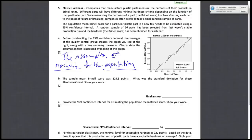So moving on to part B, the sample mean Brunel score was 229.5 points. What is the standard deviation for these 16 observations? Show your work.